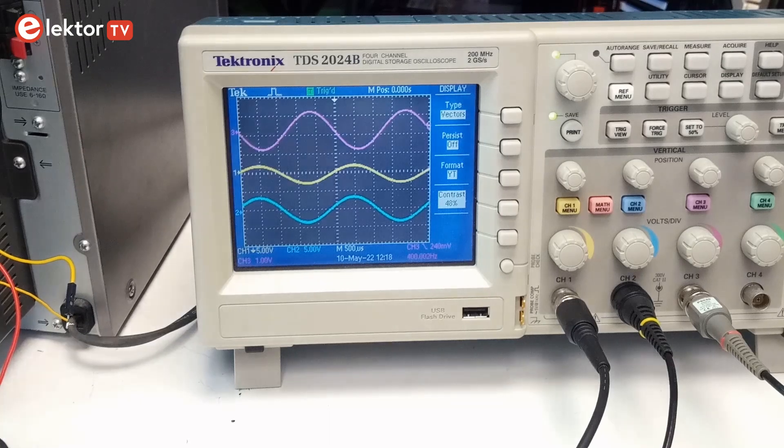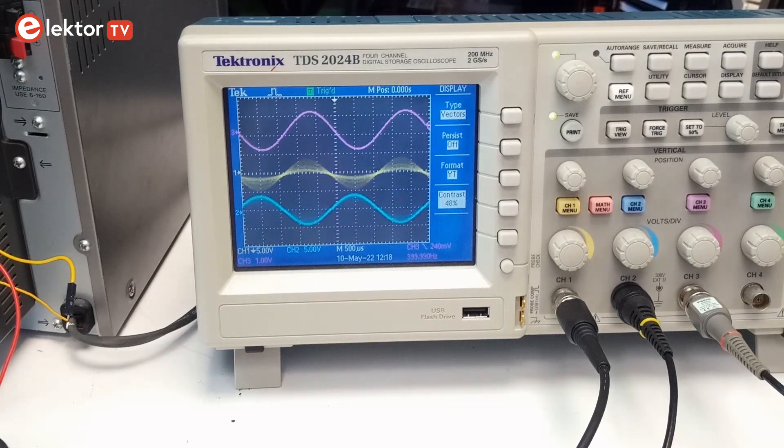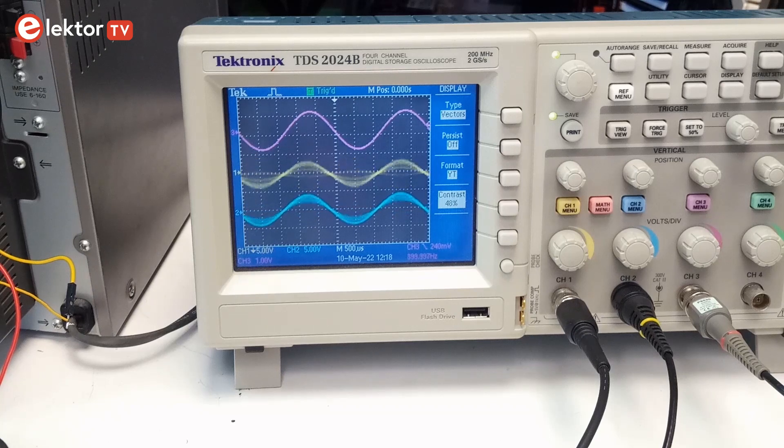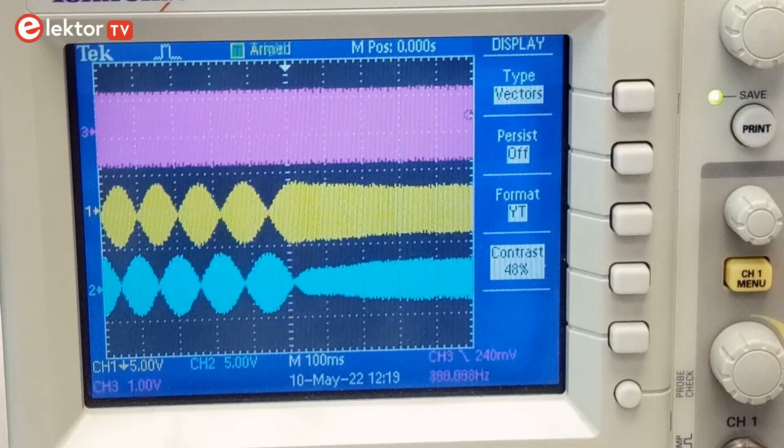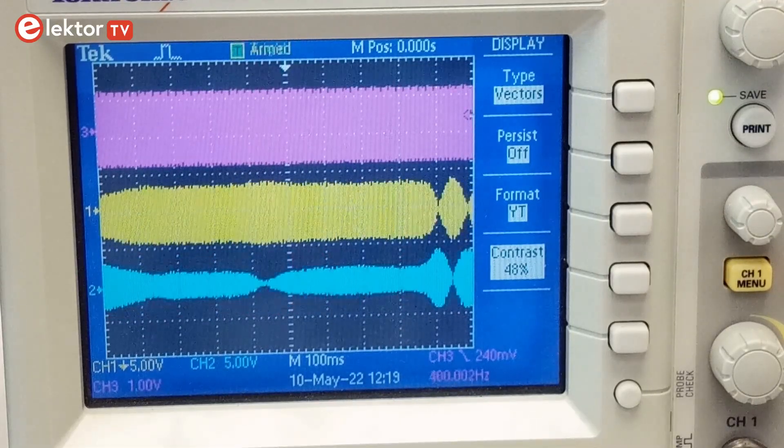Here are the signals on the output when the resolver is excited with an AC signal. I used a 400 Hz signal as indicated on the device. 400 Hz AC is common in avionics. In this case, one of the rotor windings is the input, while the stator windings form the output.